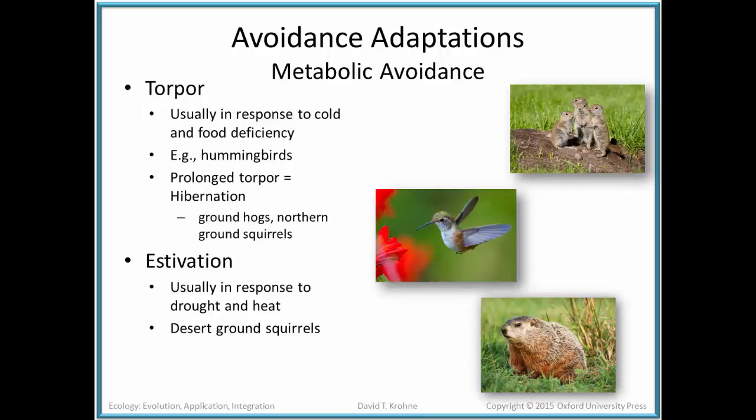Another metabolic avoidance particularly in animals is a condition referred to as torpor. Torpor is a physiological condition in which metabolic rates, temperature, heart rate, kidney function, digestion, and respiration are all depressed. Generally speaking, torpor is both an energy-saving and an avoidance behavior. Torpor is usually, but not always, in response to cold or food deficiency. For instance, in hummingbirds, it can occur on an almost daily basis in which the organism will shut down to save energy.